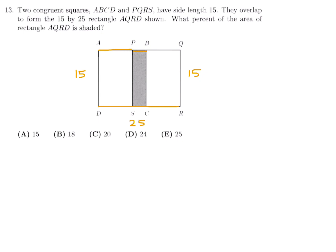Call the overlap width X and each non-overlapping portion Y. Then X + Y = 15 (side of one square) and X + 2Y = 25 (the full rectangle length).